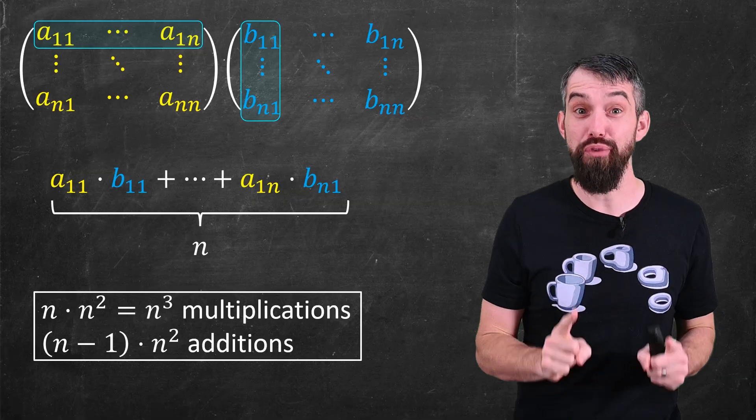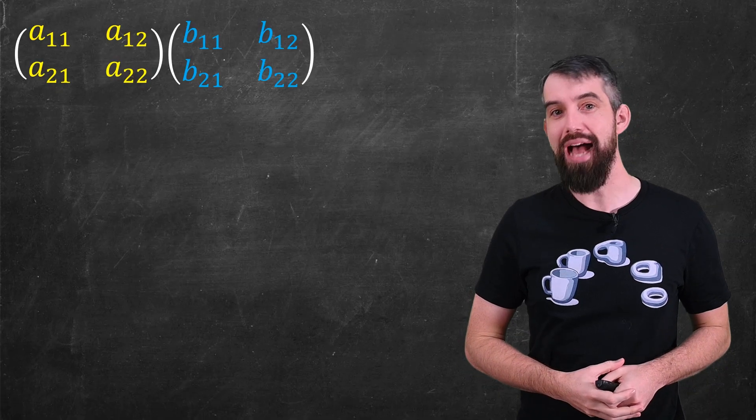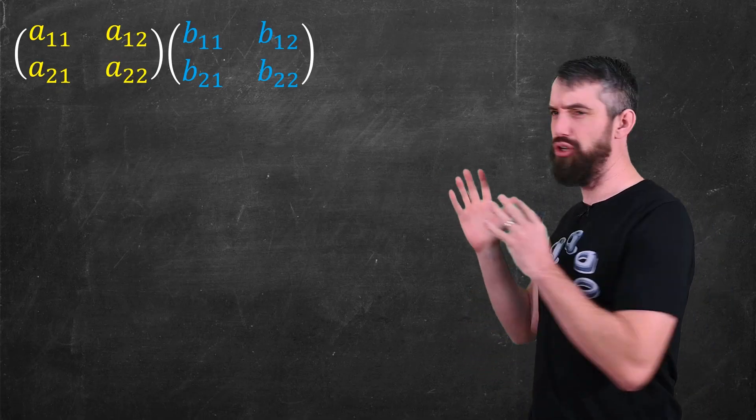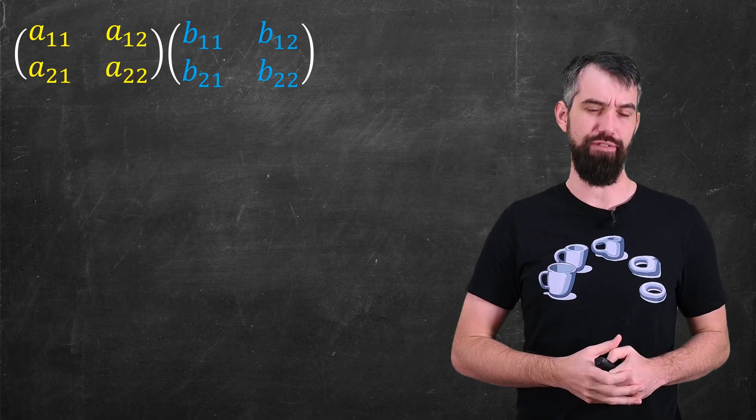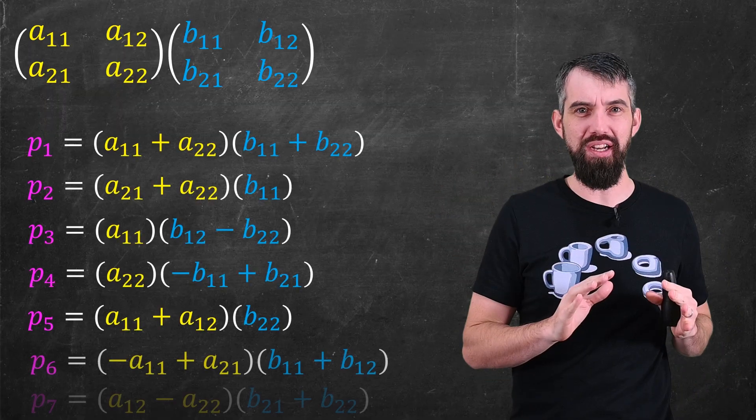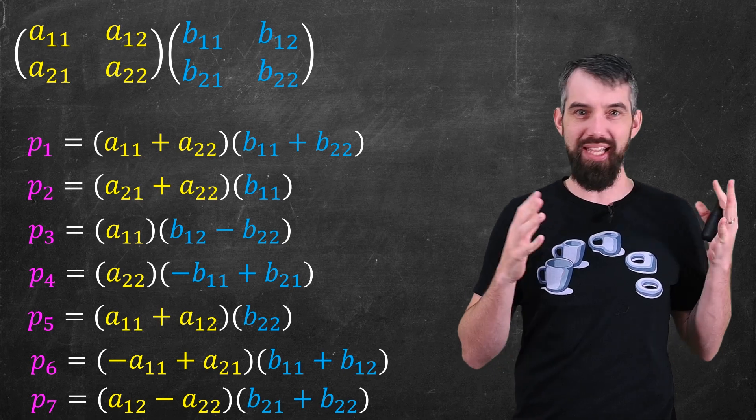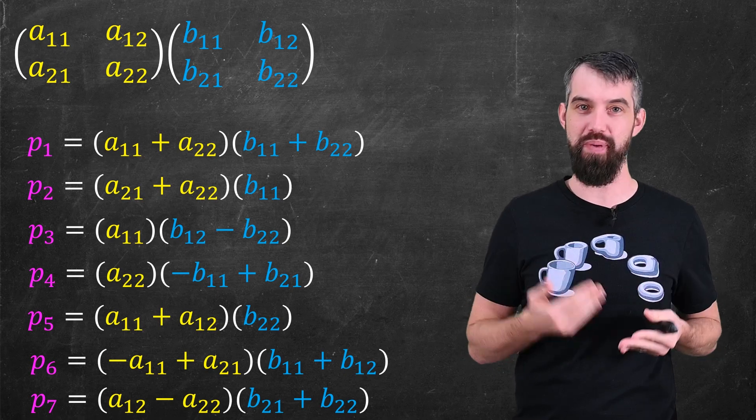Okay, so how do I improve on this algorithm? Well, I want to show you something called the Strassen algorithm. I'm going to actually do it in the 2x2 case first. And what I'm going to do is compute out seven different sub-computations. It's going to sound like a lot, but I'm going to compute out these intermediate numbers p1 down to p7.